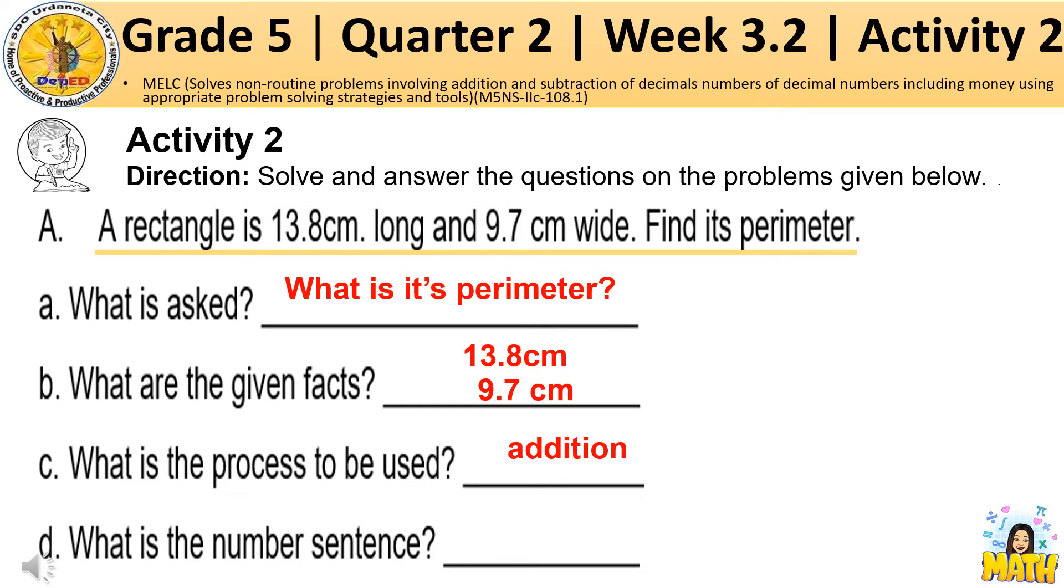Fourth, what is the number sentence? Remember the process on how to solve the perimeter? Excellent! P is equal to 2L plus 2W.